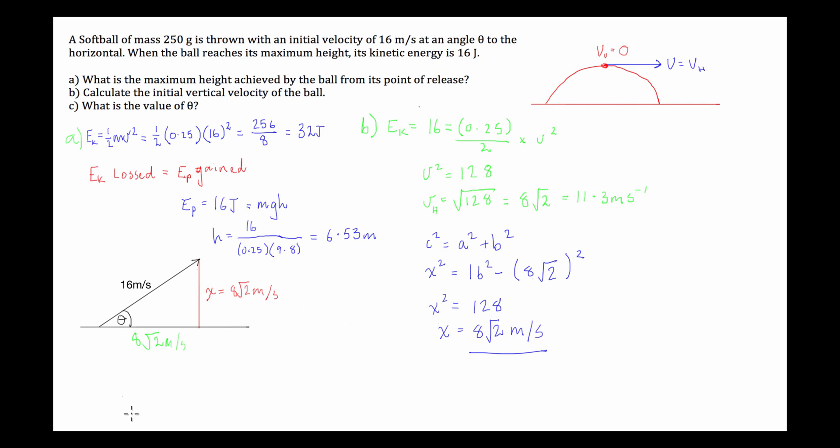Now, the last one is quite an easy one to go through, to be honest. Part c is, we're asked, what is the value of theta? Now, we've got 16 meters per second, which has been broken down into two velocities in the x and y plane, or the vertical and the horizontal.